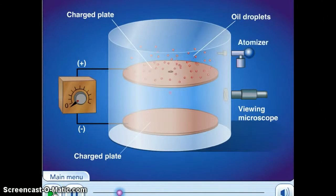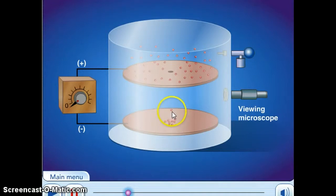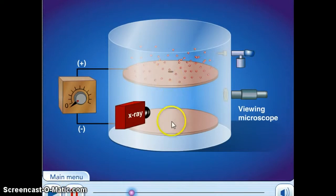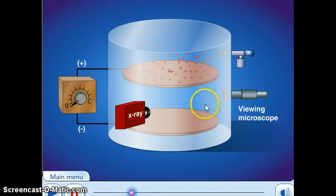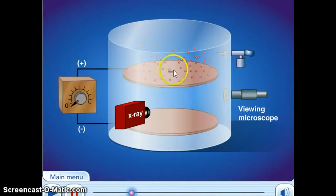At this point, the only force acting on the oil droplets is gravitational force, pulling them down toward the center of the earth. Then, in the second part of the experiment, he had an x-ray source shining onto the chamber, which contains air. When x-rays shine on the air around the oil droplet, the air becomes ionized — electrons are kicked out from the air molecules and, since they can't just float around, they jump onto the falling oil droplets.